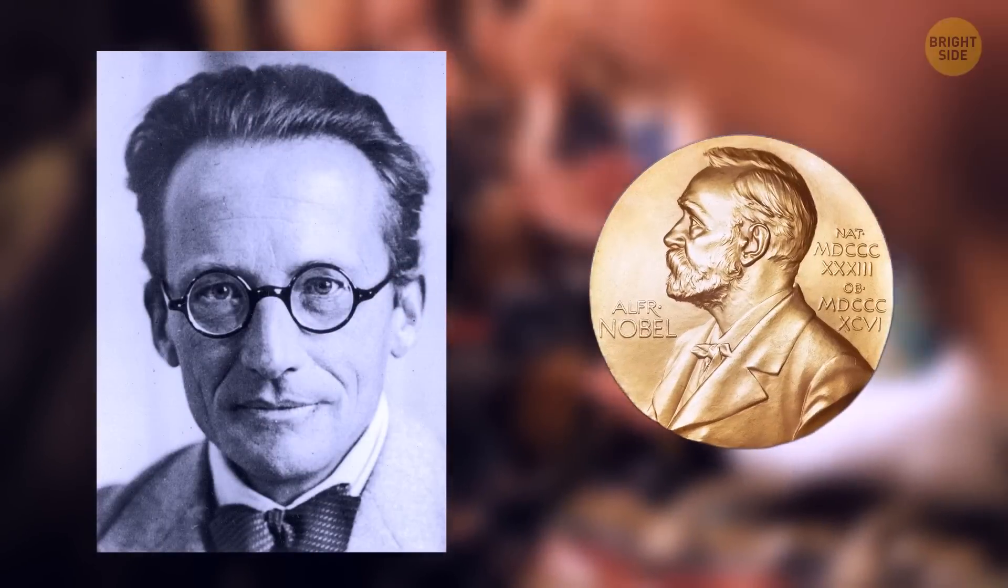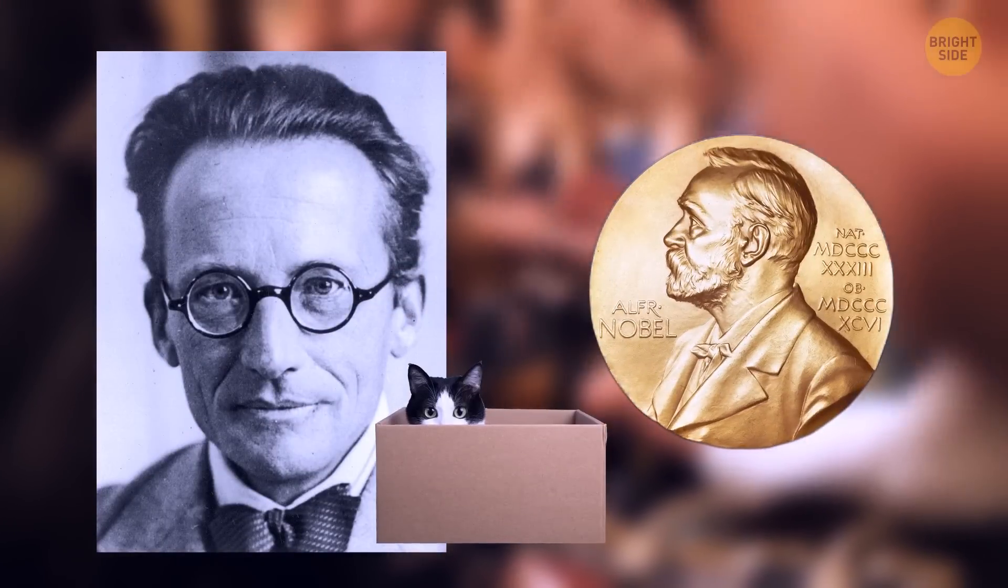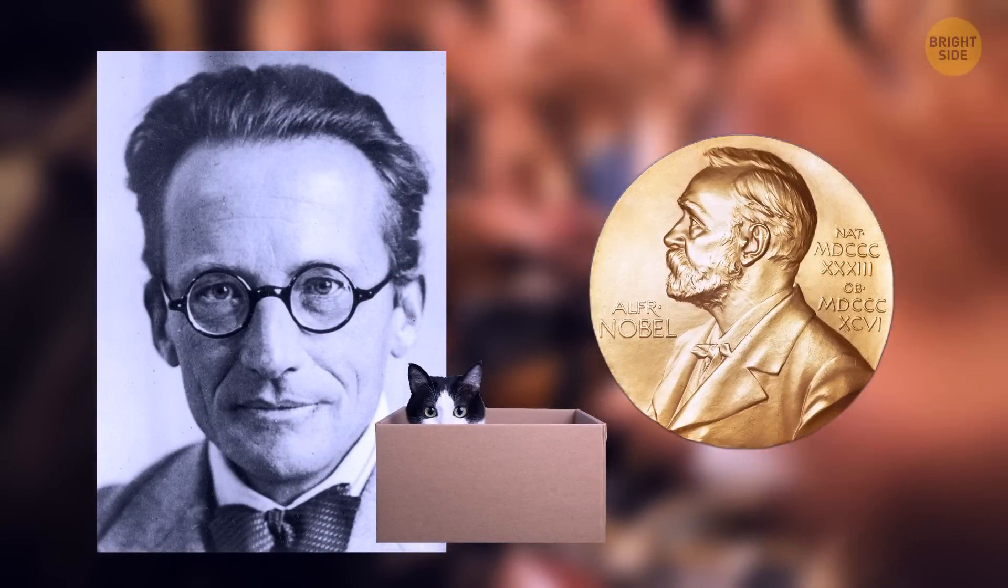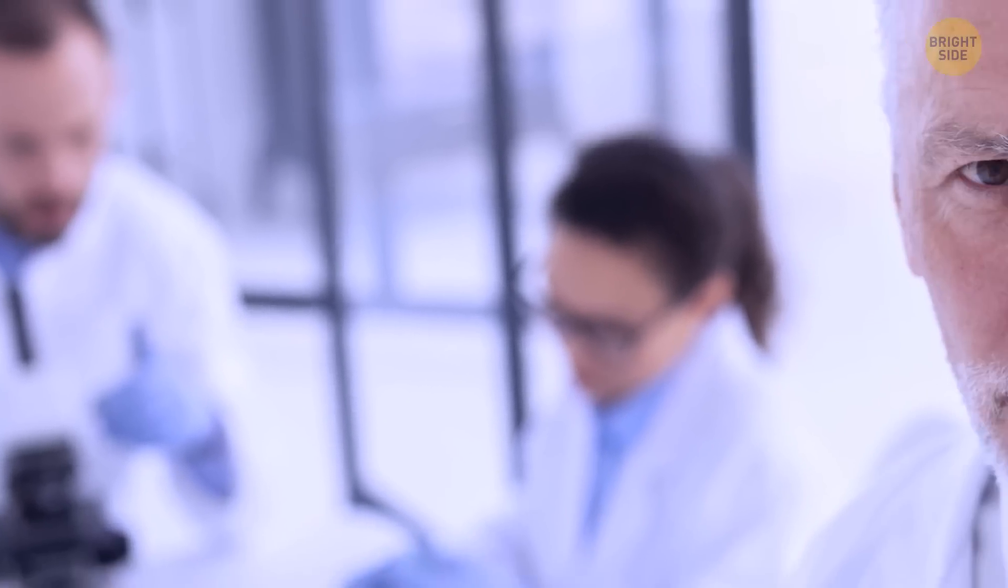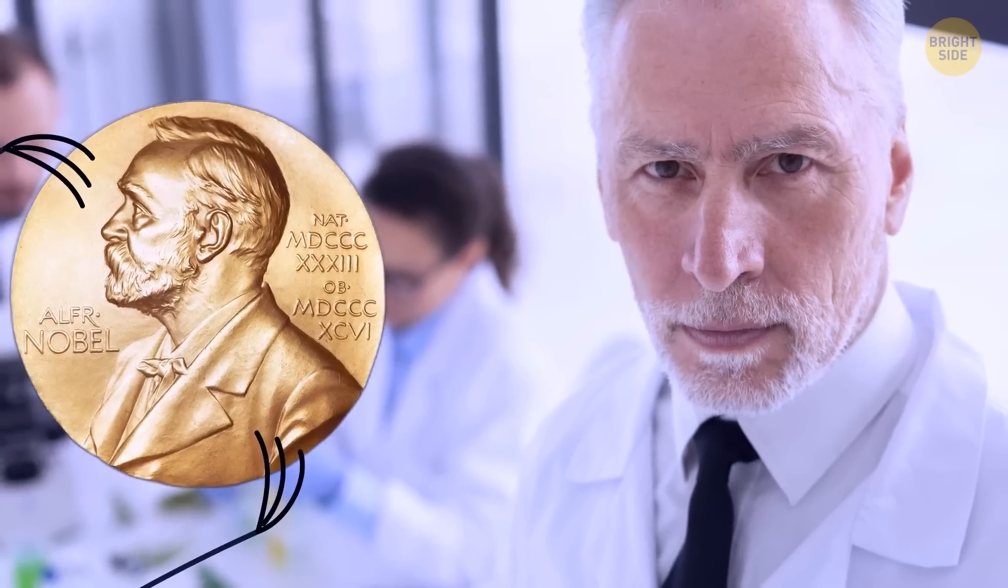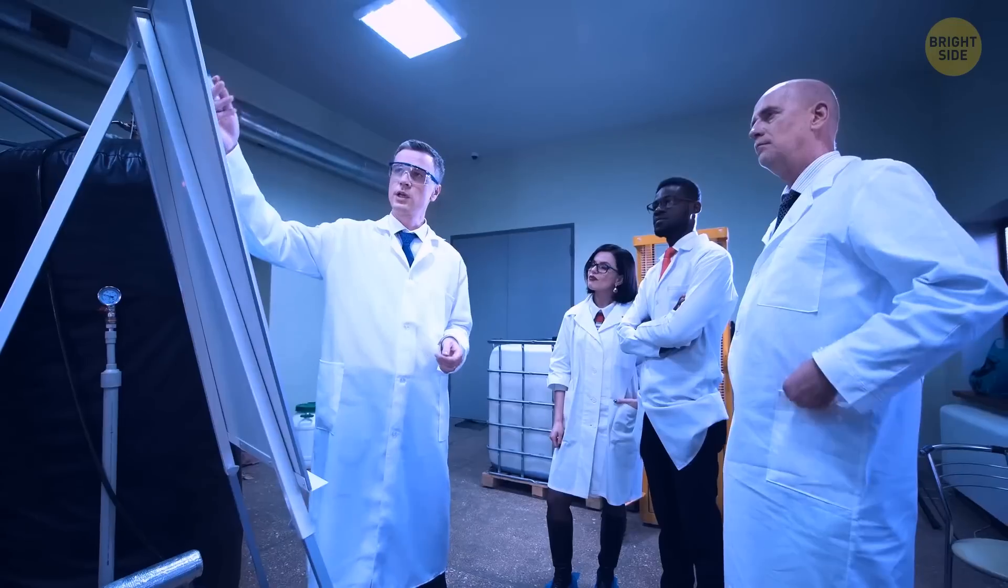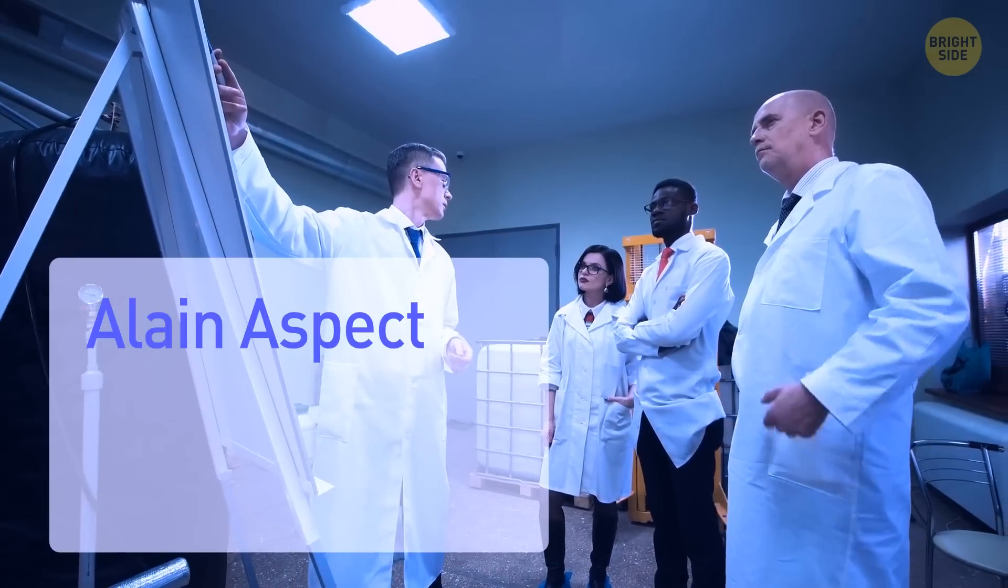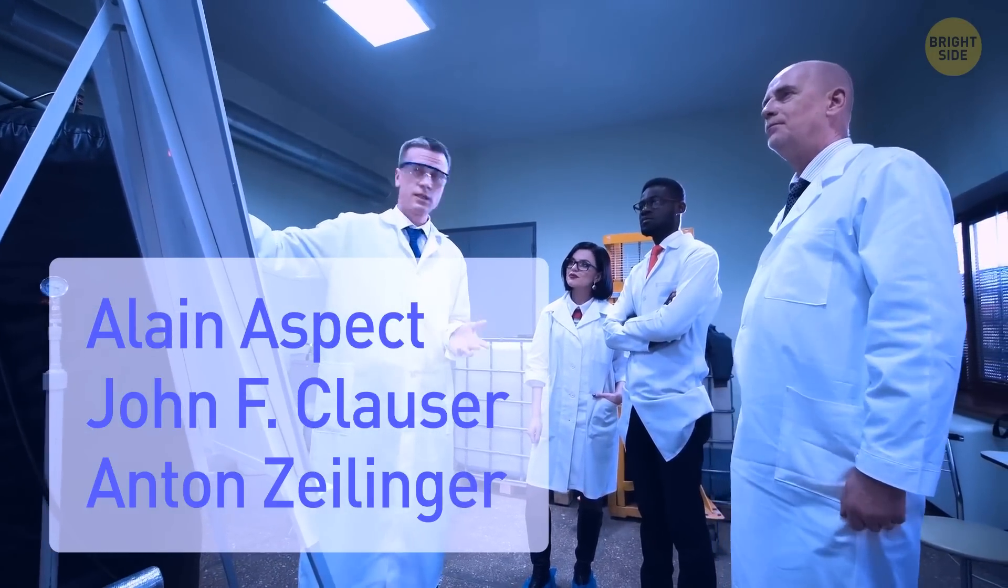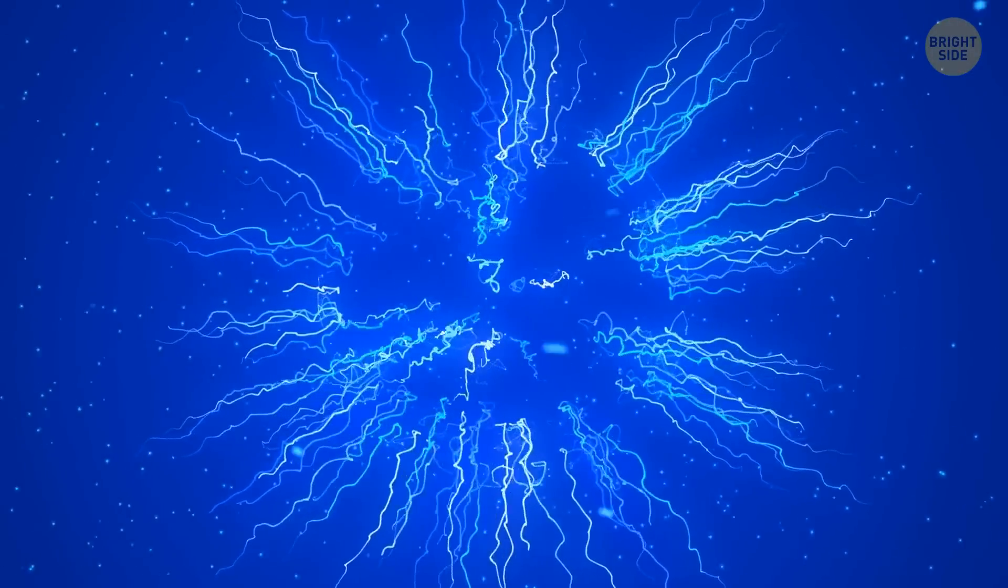Schrödinger received the Nobel Prize in 1933, even though it wasn't for this discovery. And in 2022, three more scientists received the Nobel Prize for another discovery in this field. These scientists were Alan Aspect, John F. Clauser, and Anton Zeilinger. They got it for their experiments that involve entangled quantum states.